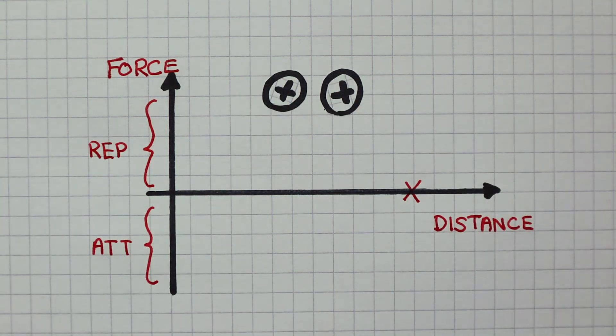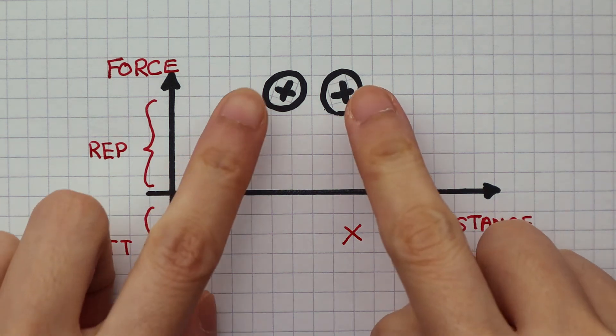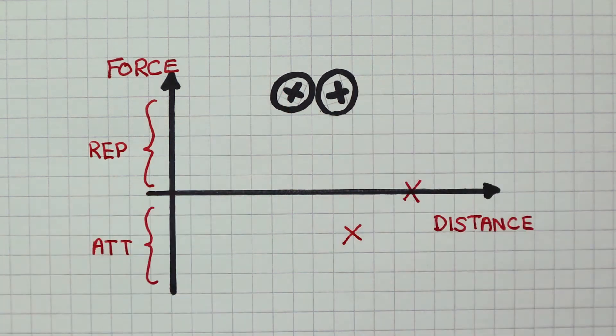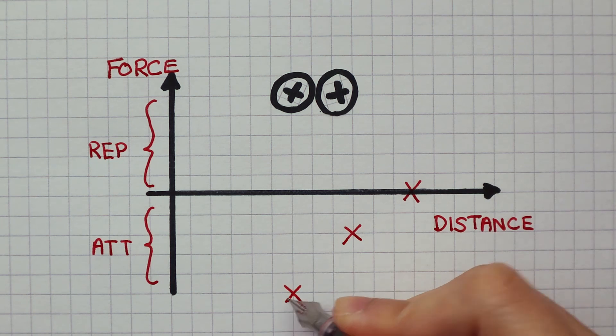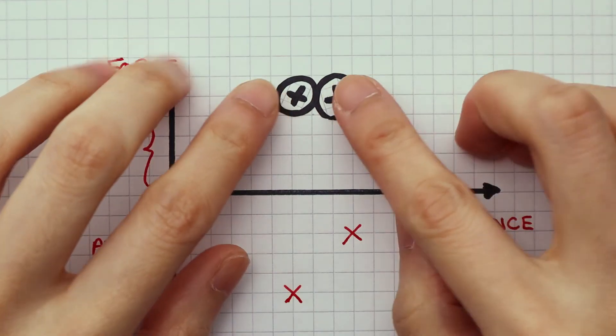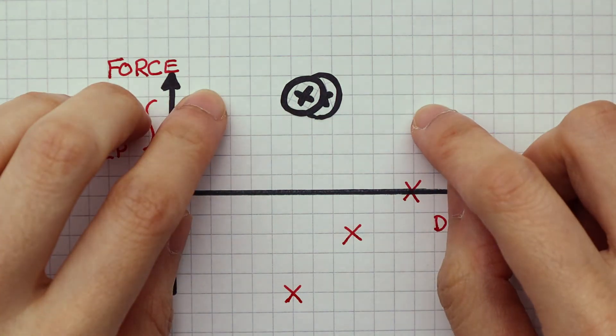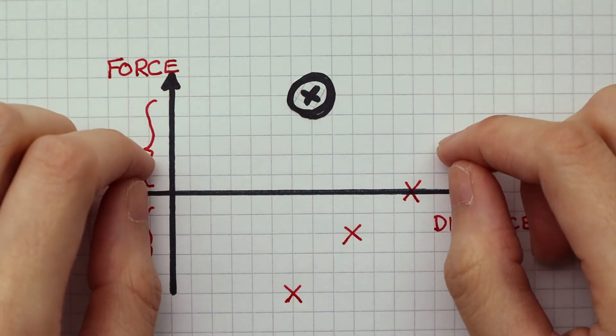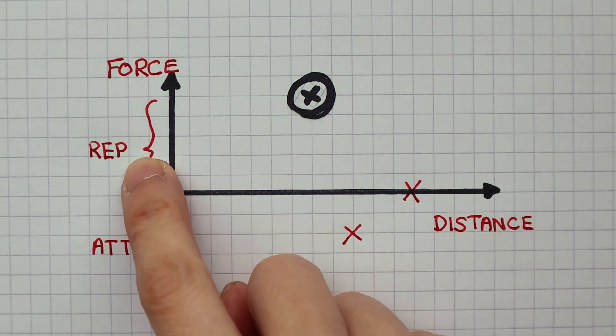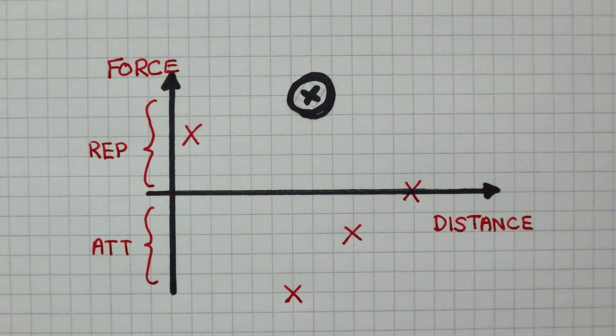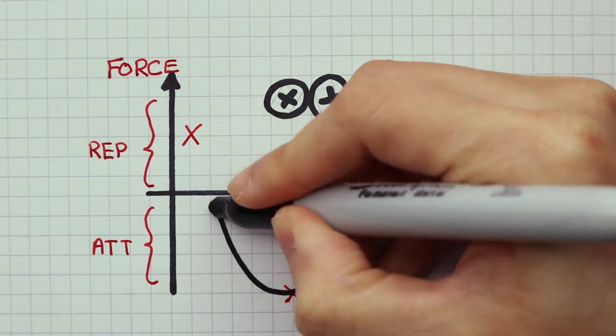But when we put them closer together, they begin to feel an attractive force. At some distance, when they're very close together, they have the maximum attractive strong nuclear force. But if we continue to bring them closer together, they will soon be pulled into a singularity. To prevent this from happening, the strong nuclear force now switches to become a repulsive force.